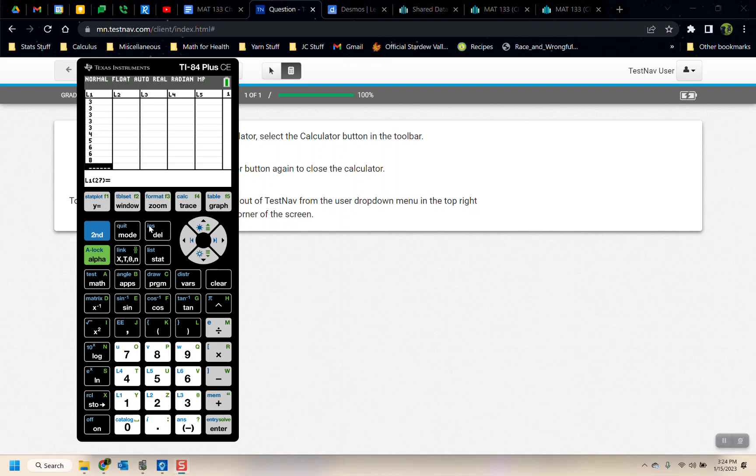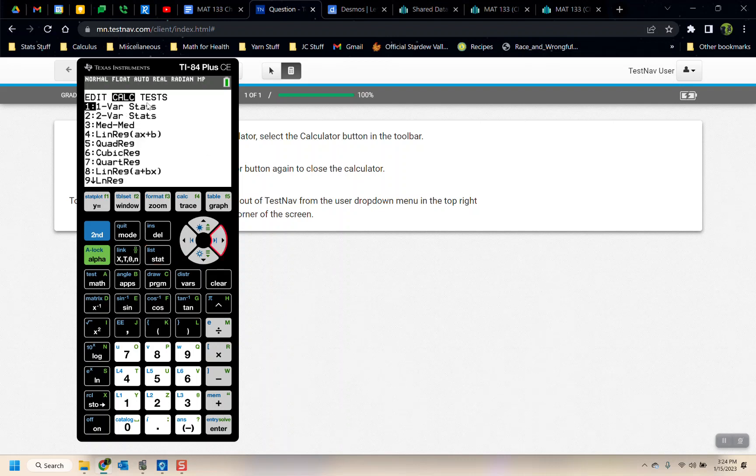All right. I have those data typed in. So now I'm going to hit Stat. Move to the right with my arrow to Calculate. Pick number one, one variable stat. L1 was where I put the data. That's list one. So I'm just going to go down to the bottom to calculate. The mean is up at the top. It's the X bar. So 2.269 is the mean. The median is hidden right now. That's what that downward arrow means. So if I hit the downward arrow, there's the median. It's two.